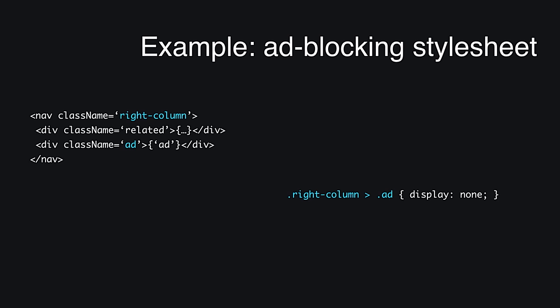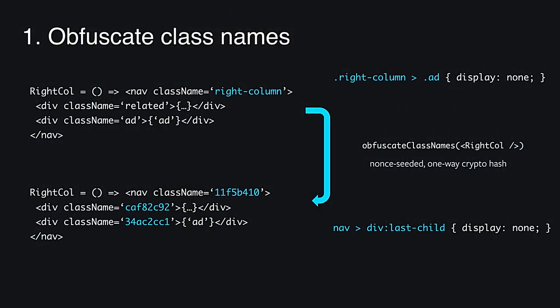Since we don't want this to happen, we can apply several transformations at the virtual DOM tree level to prevent these hacks from working. Our first transformation is class name obfuscation. It takes a component and transforms its render function so that all class names are replaced with an encrypted counterpart. This encrypted counterpart is not random, but uses a one-way cryptographic hash function. So from the point of view of an external script or stylesheet, it is as if it were random. Static class names can no longer be used to target specific elements in our DOM.